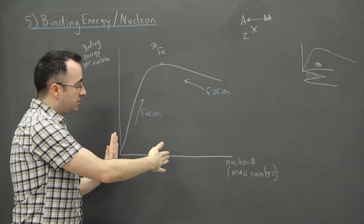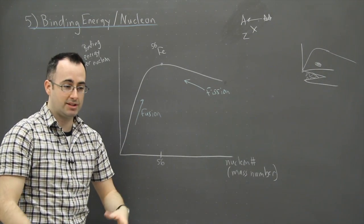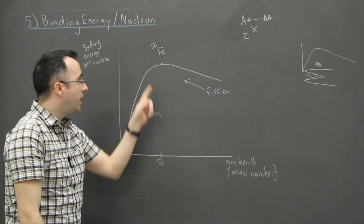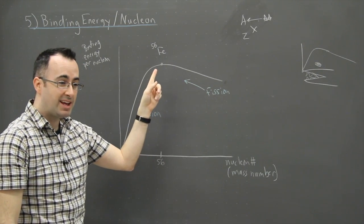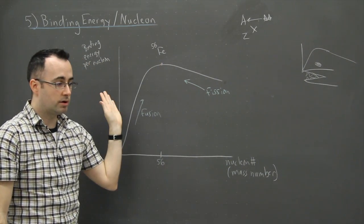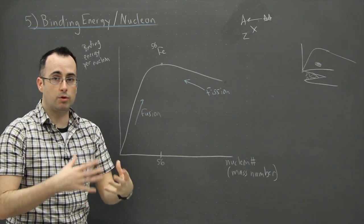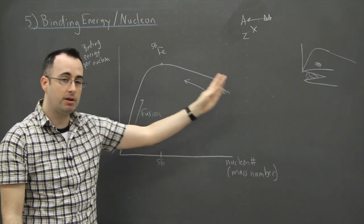And stars, as far as we know, they can only sort of naturally in these regular processes, make elements all the way up to iron 56. It seems like iron and anything lower, those are made in stars.